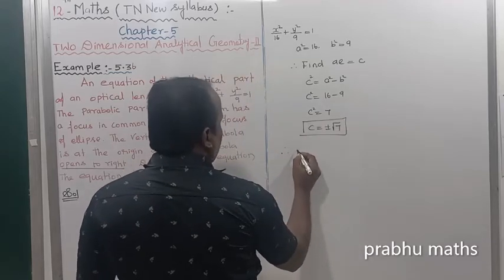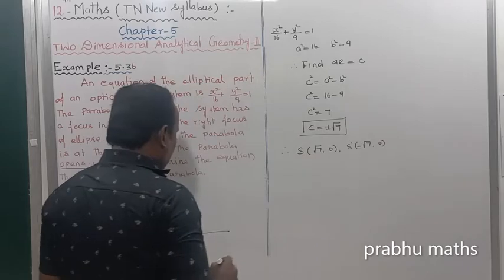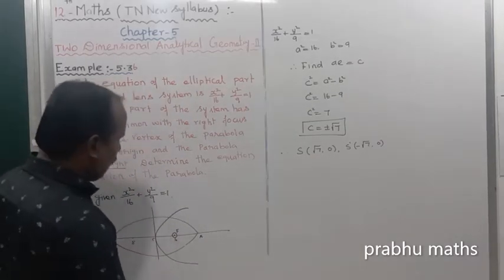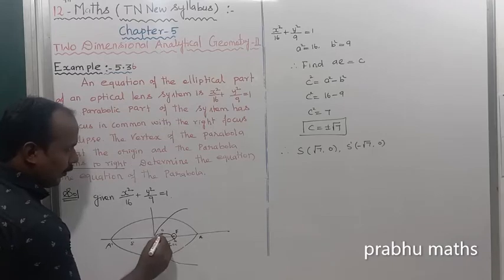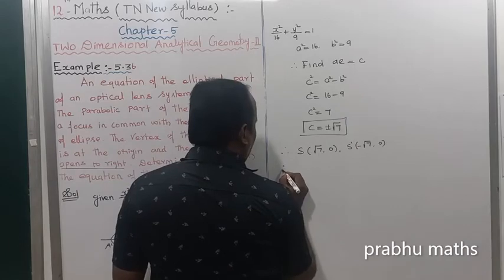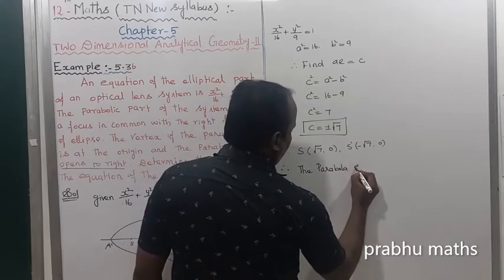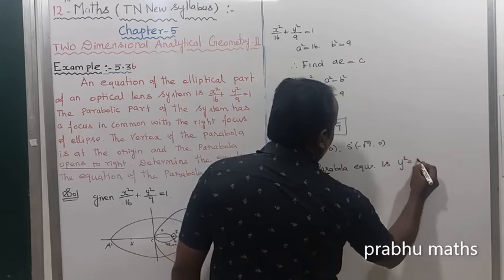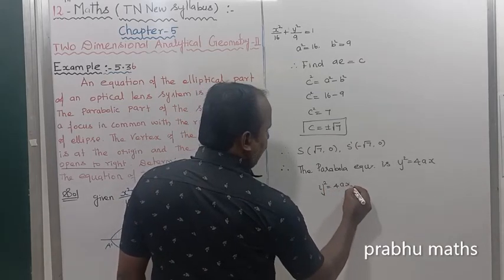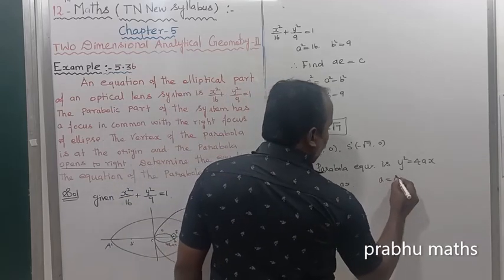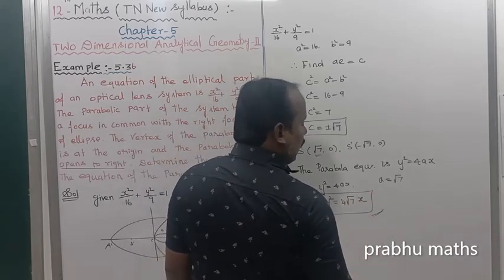The foci are: S = (√7, 0) and S dash = (−√7, 0). Since the parabola opens to the right and has its vertex at the origin, its equation is y² = 4Ax, where A = √7 (the focus distance). Therefore, the equation of the parabola is y² = 4√7 · x.